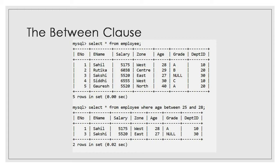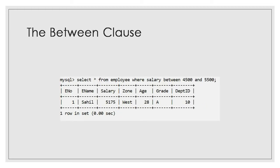SELECT statement also has a BETWEEN clause, which is used for retrieving data between a given range. For example, if I want to retrieve the details of employees whose salary is between 2000 and 5000, I will use: SELECT * FROM employee WHERE salary BETWEEN 2000 AND 5000. The values 2000 and 5000 will also be included.